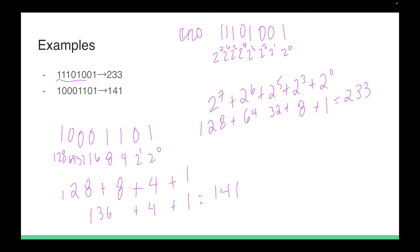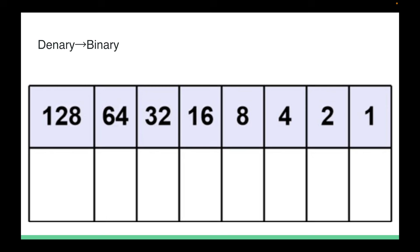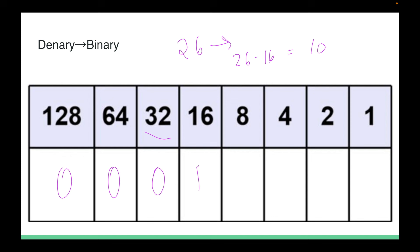Now we're going to learn how to convert from denary to binary. For example, converting 26: look for the biggest value in the chart that fits into 26. 32 is bigger, so those are zeros. 16 is the biggest that fits, so we put a 1. Subtract: 26 - 16 = 10. The biggest that fits into 10 is 8, put a 1. 10 - 8 = 2. The biggest that fits into 2 is 2, put a 1. All others are zeros.